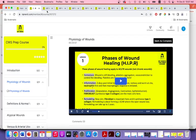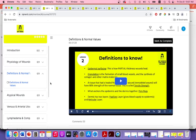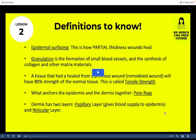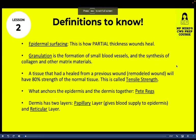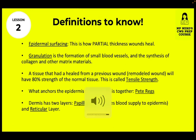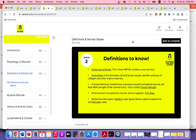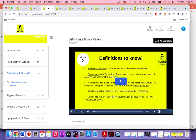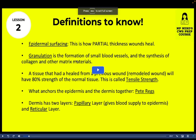Moving on to Lesson 2 — definitions and normal values. Surfacing is how partial thickness wounds heal. Granulation is the formation of blood vessels and synthesis of collagen and other matrix materials. Tissue that has healed from a previous wound will have 80% strength of normal tissue — this is called tensile strength. What anchors the epidermis and dermis together is rete ridges. The dermis has two layers: papillary and reticular. This slide alone has at least three to five CWS exam questions.